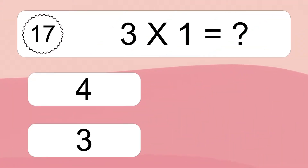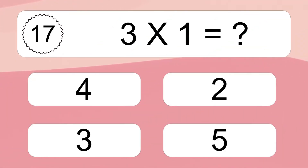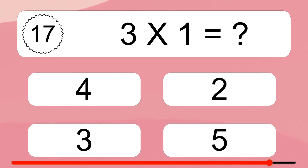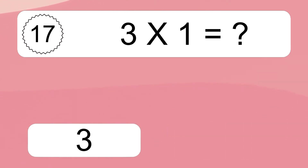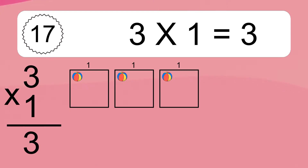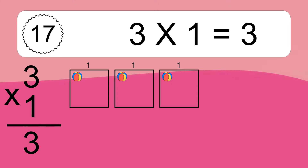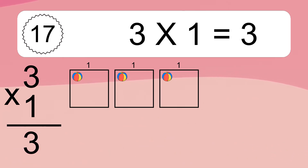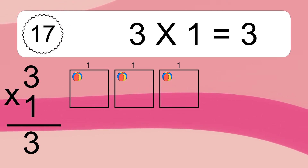3 times 1 equals what? 3 times 1 equals 3. We have 3 boxes and each box has 1 colorful ball inside. If you count all the balls in all the boxes together, you will have 3 times 1 balls. This equals 3 balls.